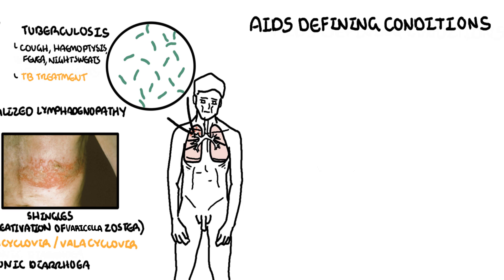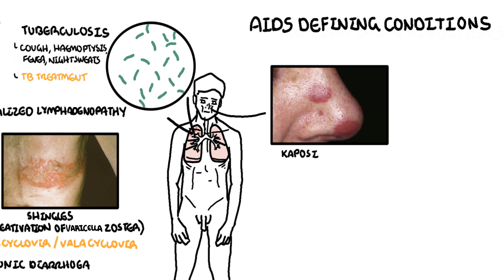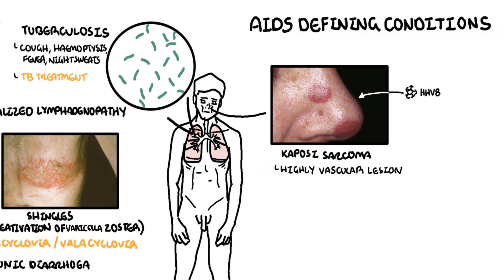Another AIDS defining condition with a variable CD4 count is Kaposi's sarcoma, which is a malignant multifocal highly vascularised tumour caused by human herpes virus 8. It typically occurs in the face or the oral cavity. Treatment involves local surgical excision as well as the use of alpha interferons.